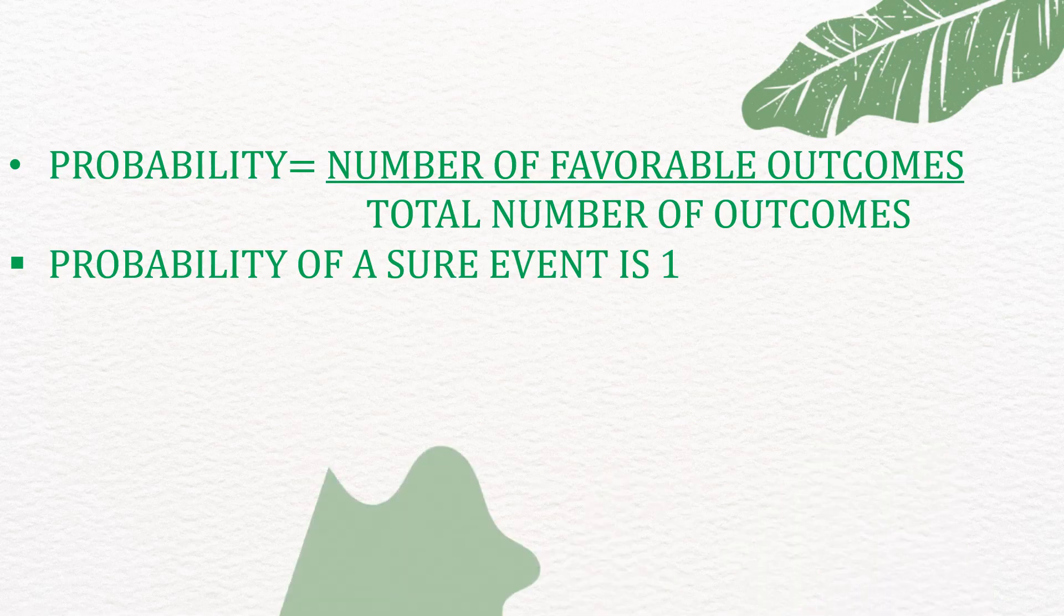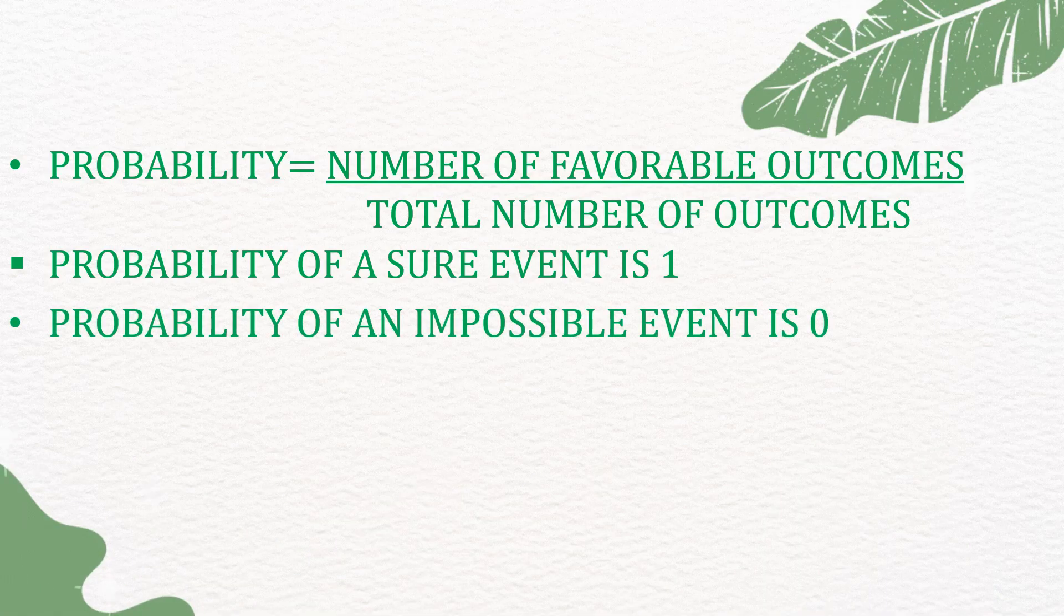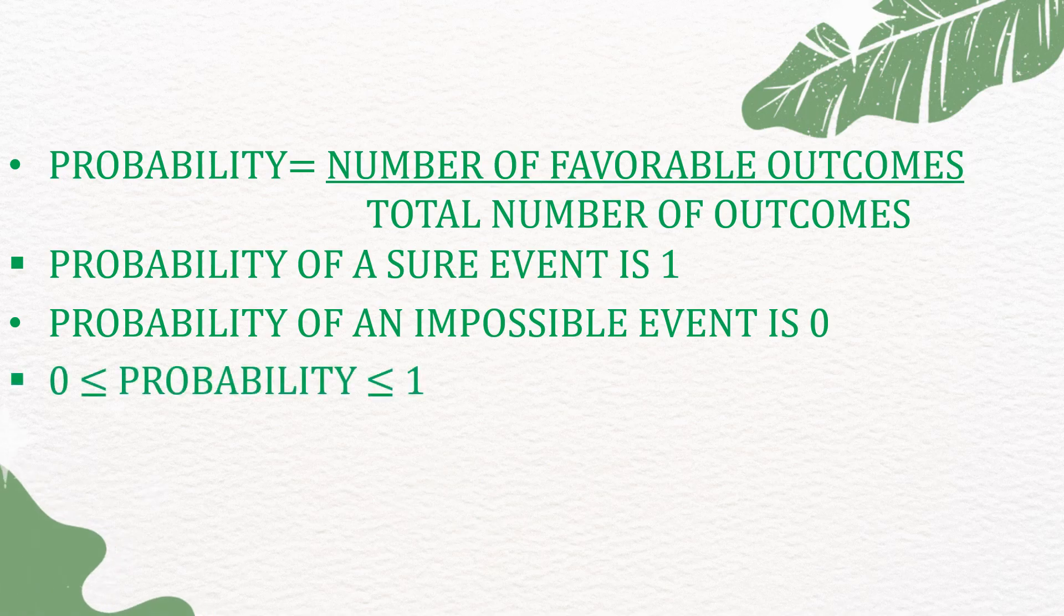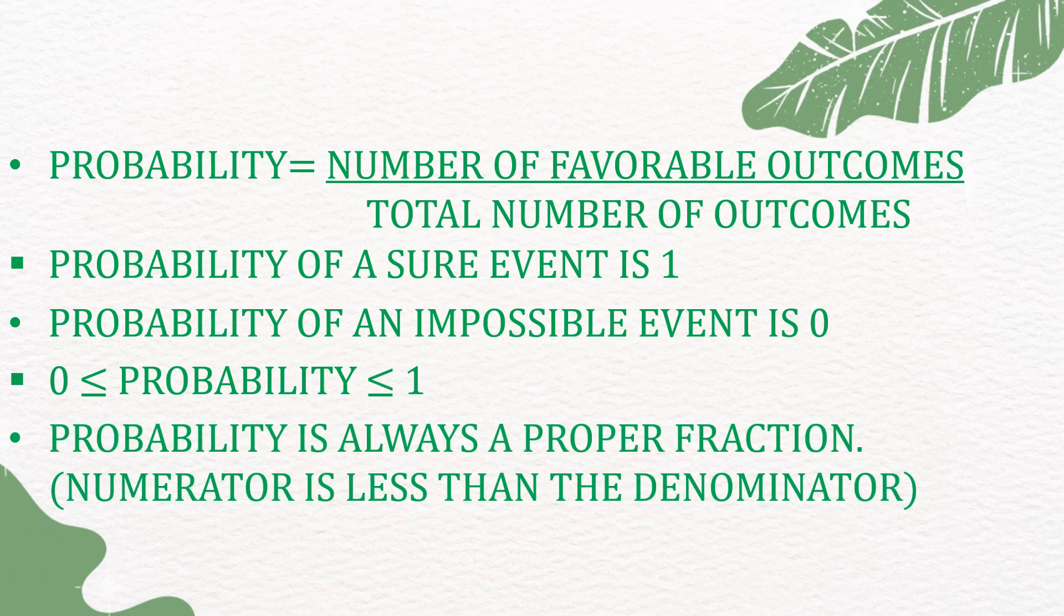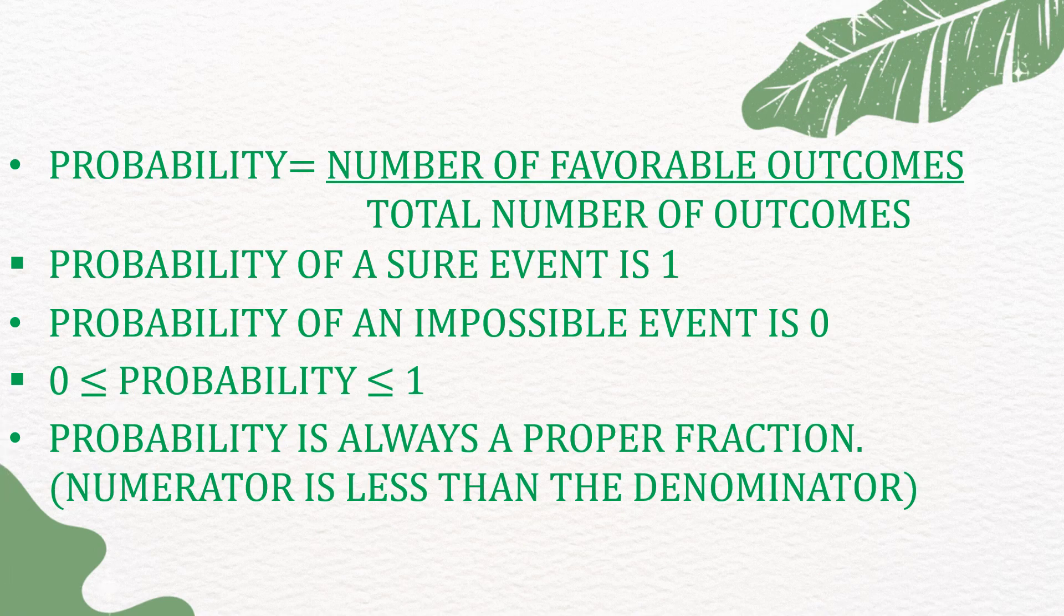Probability of a sure event is 1. Probability of an impossible event is 0. 0 is less than equal to the probability less than equal to 1. Probability is always a proper fraction where the numerator is less than the denominator.